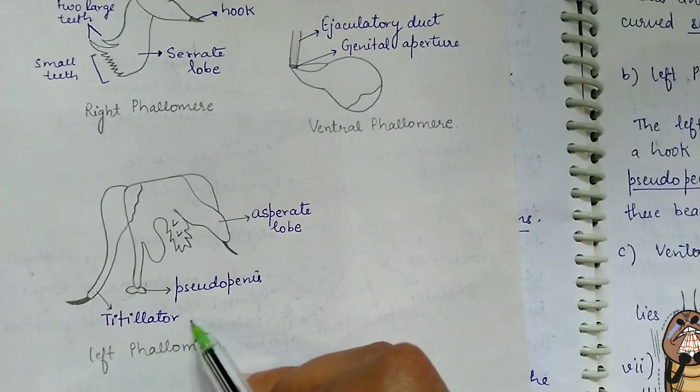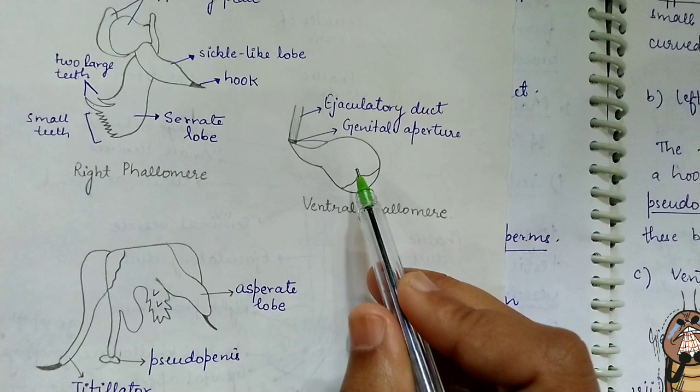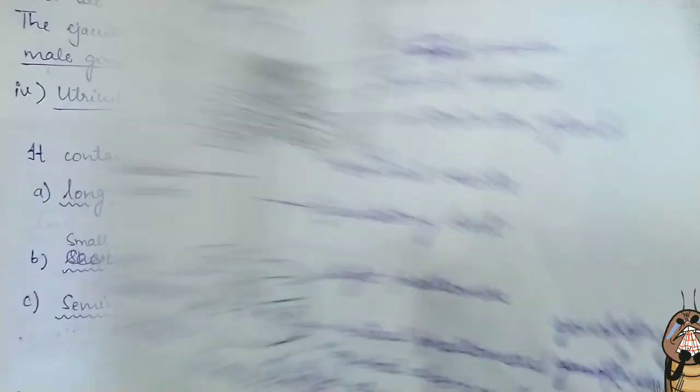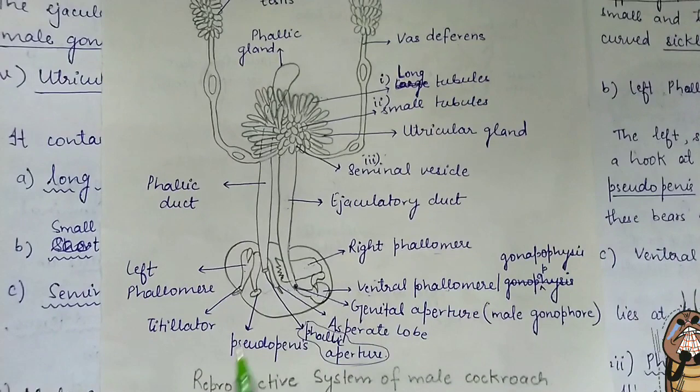The ventral phallomere is a simple broad brownish plate, and the male genital aperture lies at its end, as seen in the diagram.